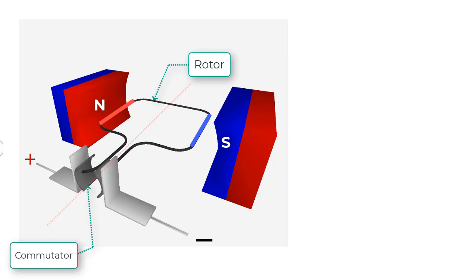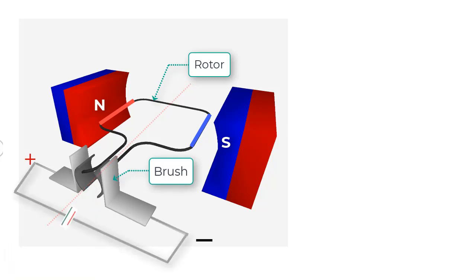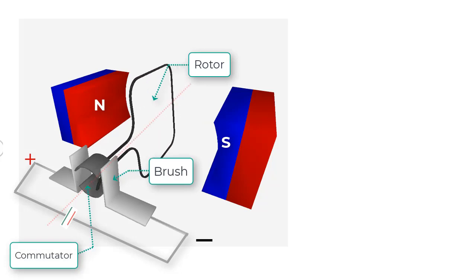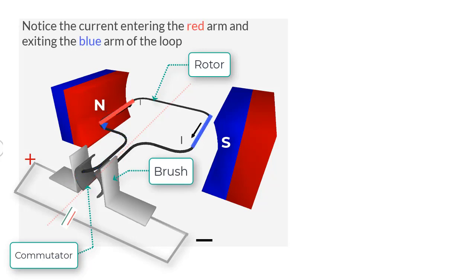Each commutator in turn makes contact with a battery terminal through what is commonly called a brush. These brushes are part of an external circuit that connects to a source of EMF or a battery. The brushes remain stationary while the commutator rotates.